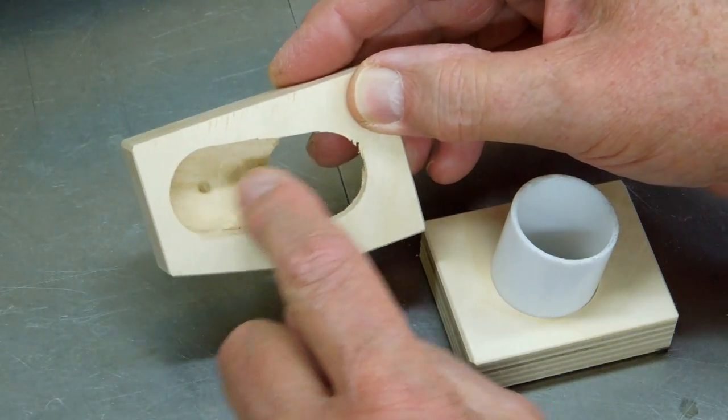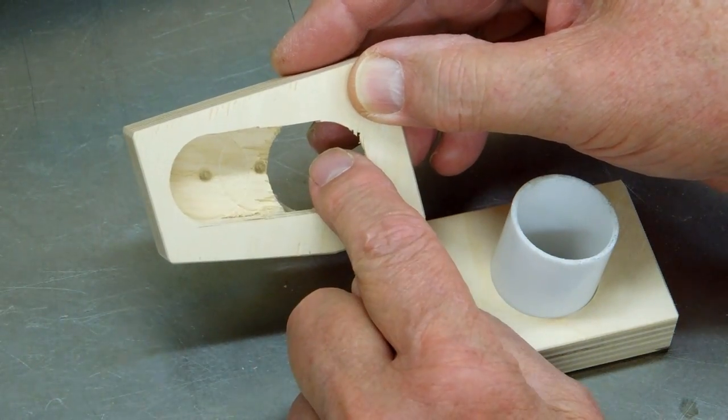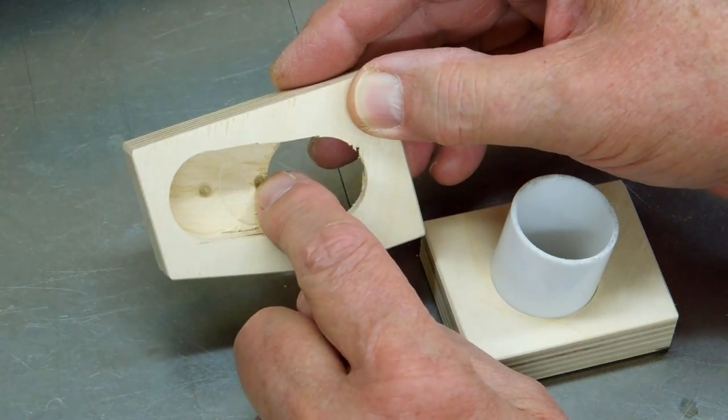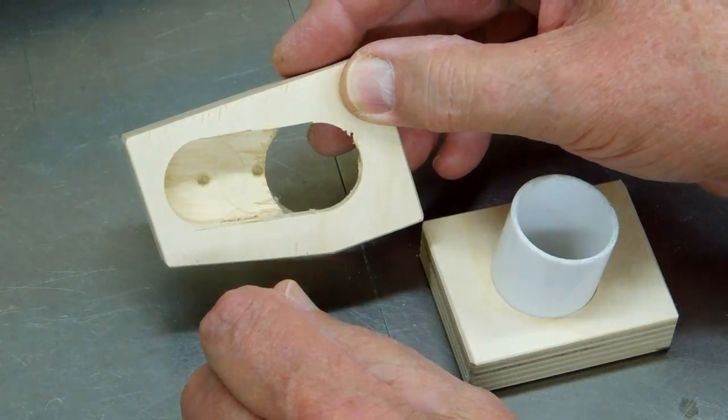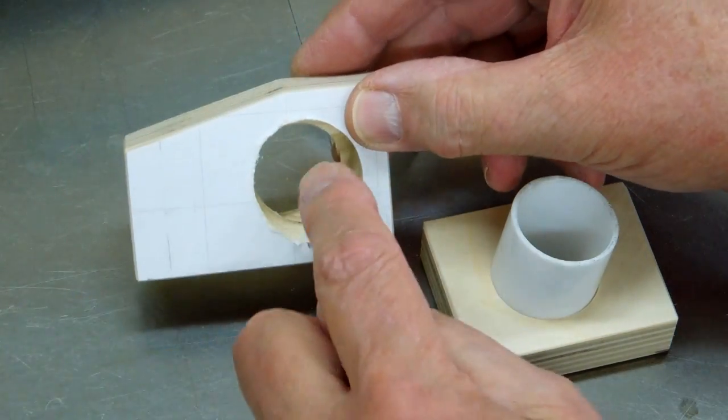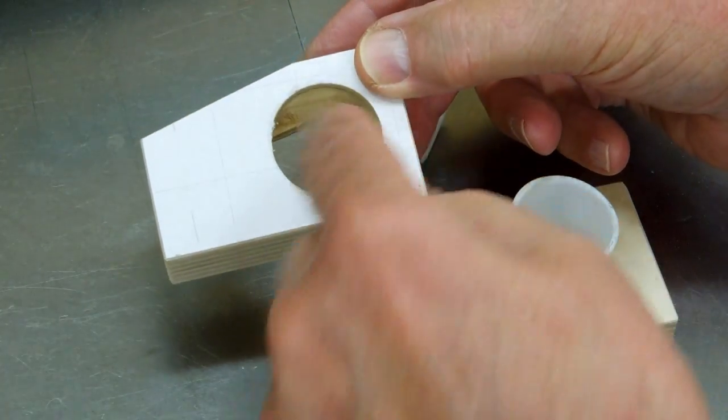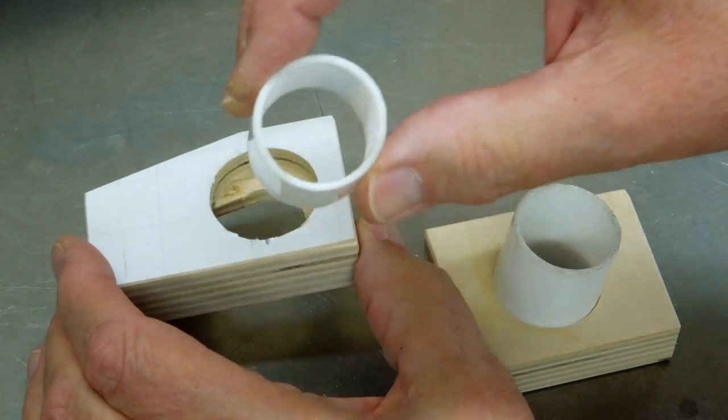One inch Forstner, center to center, inch and a quarter. I drilled out the center of it and cleaned it up with a chisel. Inch and a quarter, angled at nine degrees in this direction.